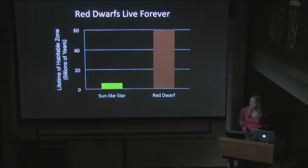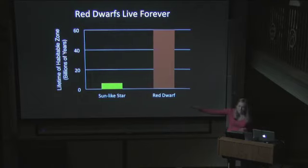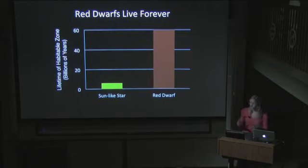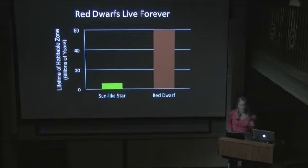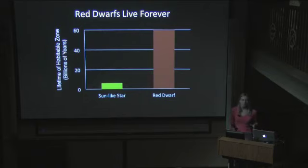Another advantage of living around a red dwarf is that they live essentially forever. This plot compares the life expectancy of a planet in the habitable zone of a star like the Sun — about 9 billion years — with the lifetime of a planet in the habitable zone of an M dwarf, which is 60 billion years. That's much longer than the age of the universe. There are red dwarfs born at the beginning of the universe that are still alive now and haven't even reached middle age. The reason is that these stars are very small, they mix completely, use all of their fuel, and use it at a very slow rate. They're really the tortoises in the story of the tortoise and the hare, and they might win in the end too.